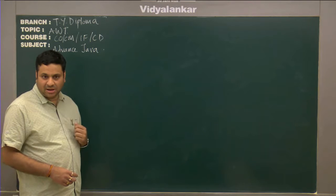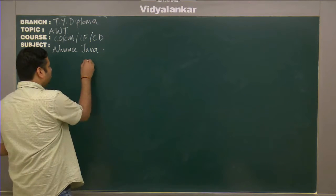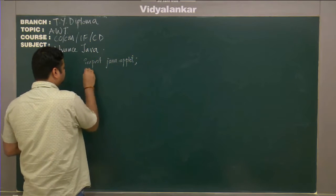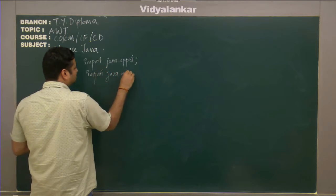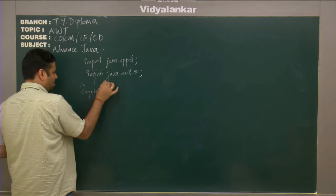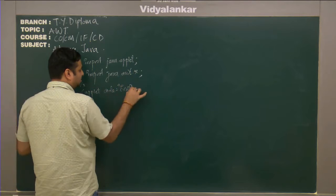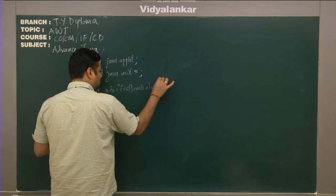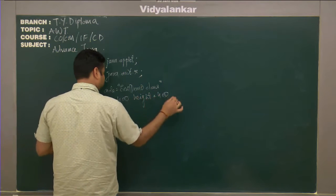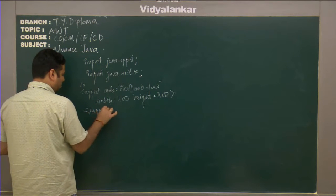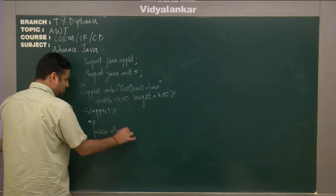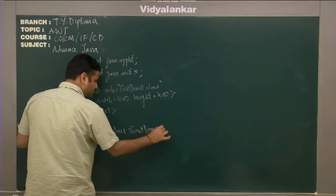Since we all know to create an applet, we have to create a class that extends the applet. For that, we need to import applet package. Let us make the name as Event Demo. Let it be 400 pixels width, 400 pixels height. Close the applet tag. We'll create a class Event Demo.